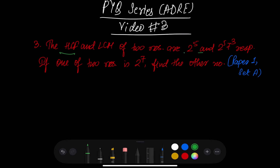HCF is 2 to the power 5 and LCM is 2 to the power 5 into 7 to the power 3. And one of the numbers is 2 to the power 7. We know that the theorem is: HCF multiplied by LCM is equal to the product of the two numbers.